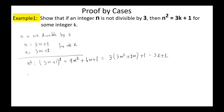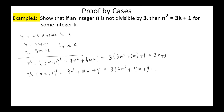In the second case, N squared equals (3m plus 2) squared, which is 9m squared plus 12m plus 4, which is 3(3m squared plus 4m plus 1) plus 1, and we can rewrite this as 3K plus 1 for some K. In both cases we obtain the desired conclusion, so the original statement is true, hence proved.